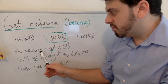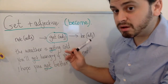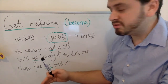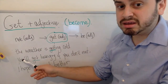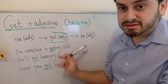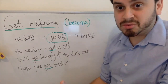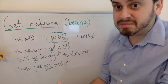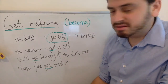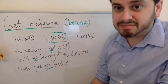So 'the weather is getting cold' means before it wasn't cold, but it's becoming cold — it's in the process of becoming cold. Next is a conditional: 'You will get hungry if you don't eat.' And the last one: 'I hope you get better' — 'get better' means become well again, which you'd say to someone when they're sick.